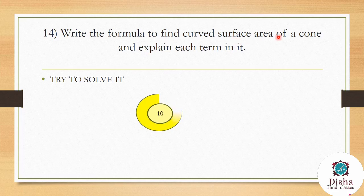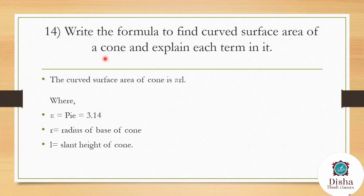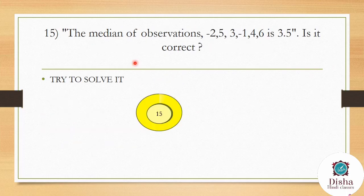Write the formula to find the curved surface area of a cone and explain each term. The curved surface area of a cone = πrl, where π = 3.14, r = radius of the base of the cone, and l = slant height of the cone.